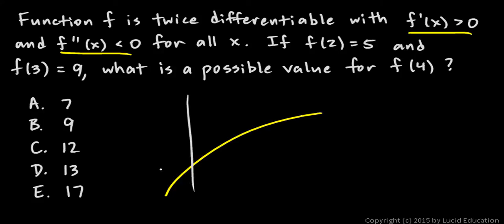If we draw some axes on here, and we're given some values: f of 2 is equal to 5, so we can plot a point here, and we're told that f of 3 is equal to 9, so if we go out to 3, and here we're up to 9, then what's a possible value for f of 4?